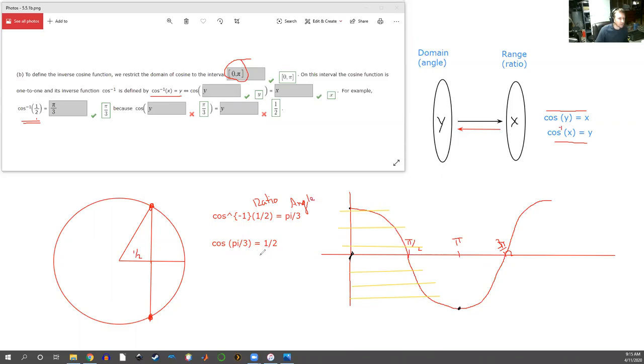Well, here we switch the role of these things. Cosine inverse takes a ratio, gives us an angle. Well, that means that the cosine without the inverse takes the angle and gives us the same ratio.